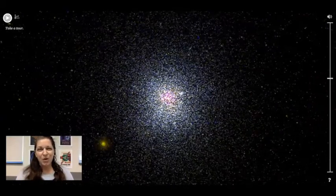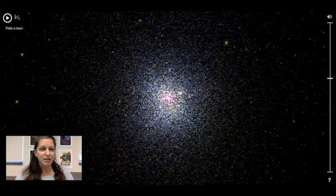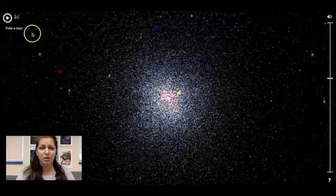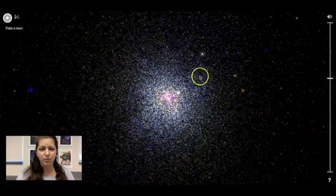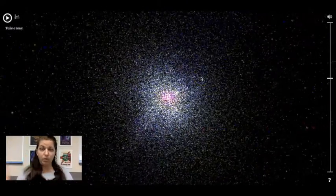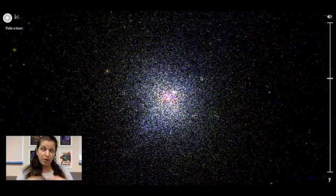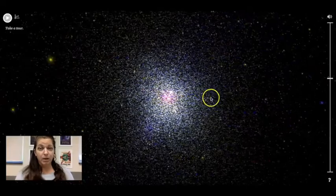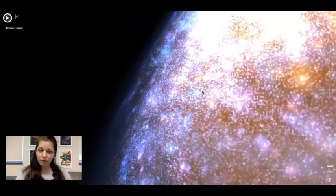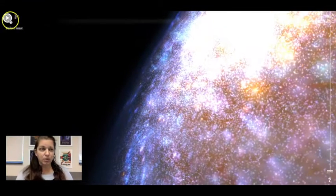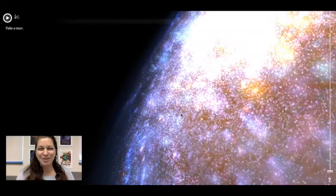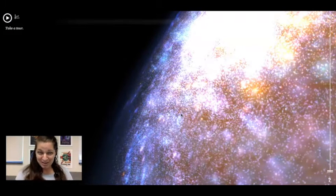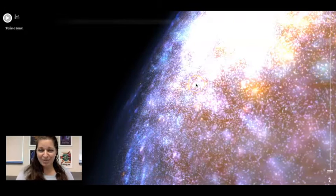So this is called 100,000 Stars and it's a Chrome experiment that I've been using for years because it gives a really great visual on what our local, not only our star system, but all the other star systems that are in our local region. So I am going to actually start with zooming out and I do encourage you when you first use this teaching tool, go ahead and take the tour. But I'm gonna give you my own tour of this particular website because I just love it so much.